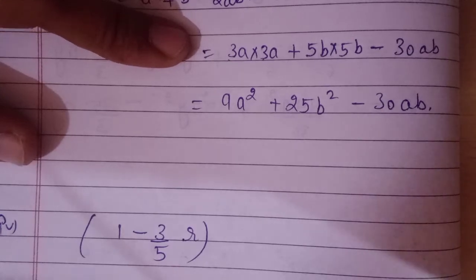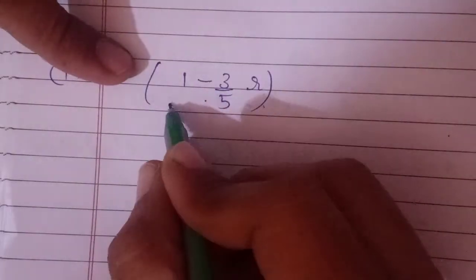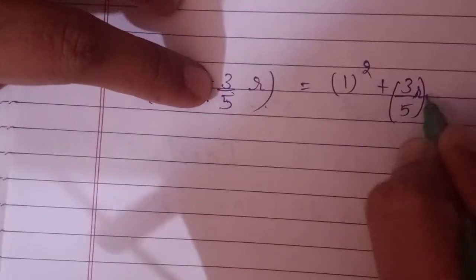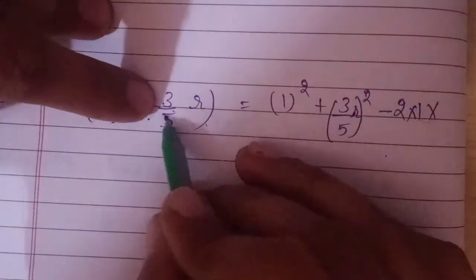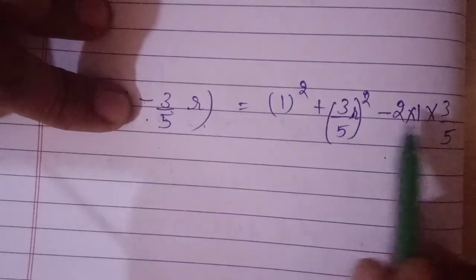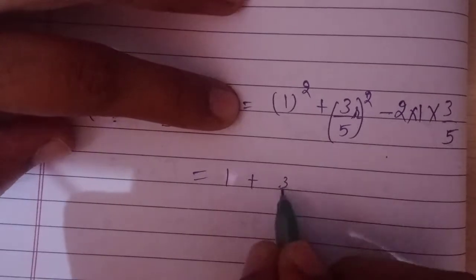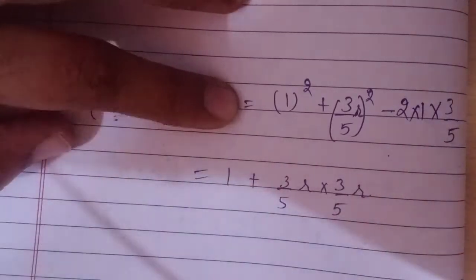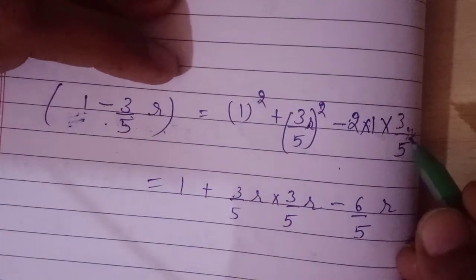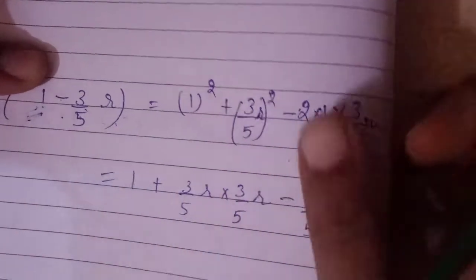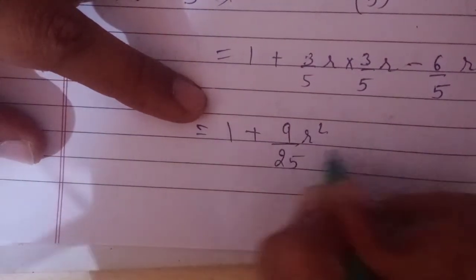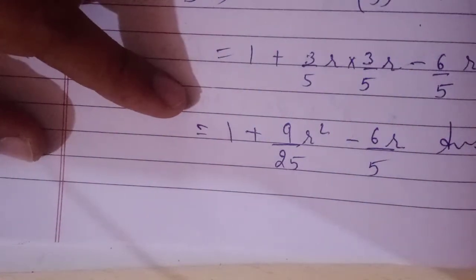I hope you have understood. Now let's move to the next question: (1 - 3r/5)². Again this is (a-b)², where a = 1 and b = 3/5. So it's 1² + (3/5r)² - 2×1×(3/5r). That gives 1 + 9r²/25 - 6r/5. This will be the answer.